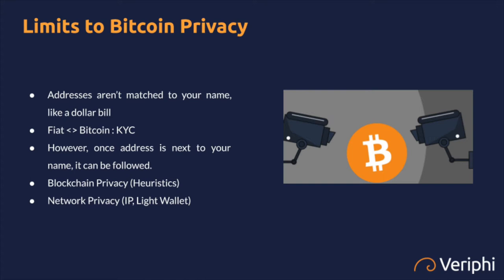There's also network privacy. If you're using, say, a Bread wallet or Ledger Live software, you're connecting to Ledger's corporate server, and you're probably doing it through your own IP address. So now Ledger knows that the device they shipped to your physical address can be linked to this wallet and to this IP address. They've effectively linked your physical address to your Bitcoin addresses in that way.